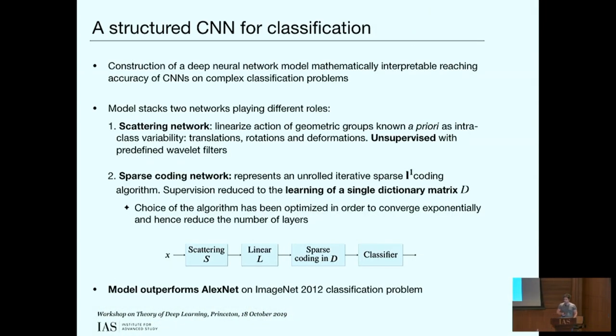What was the goal of the work? The goal was to construct a deep neural network model which is mathematically interpretable, reaching accuracy of convolutional neural networks on complex classification problems like ImageNet. By mathematically interpretable, we mean that we understand the role of all the weights across the different layers and their mathematical properties in the pipeline, which is not the case for standard CNNs.